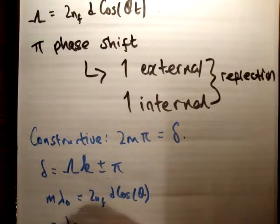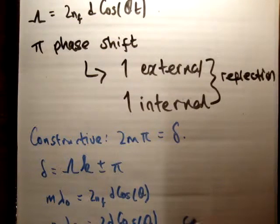Therefore, m lambda f is equal to 2d cos theta. This is for constructive interference.